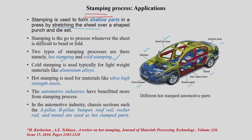Hot stamping is done at elevated temperature; cold stamping is done at room temperature — it depends on the material. Cold stamping is typically used for lightweight materials like aluminum alloys, while hot stamping is generally used for high strength steels (HSS or UHSS — ultra high strength steels). Different hot-stamped and cold-stamped automotive parts are shown as examples to give context of where we stand in discussing the stamping process.